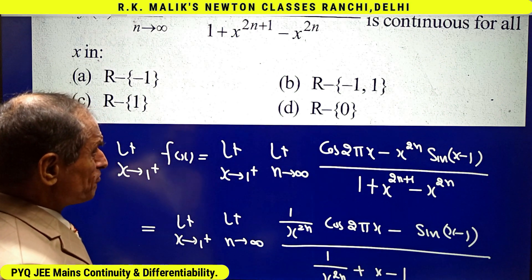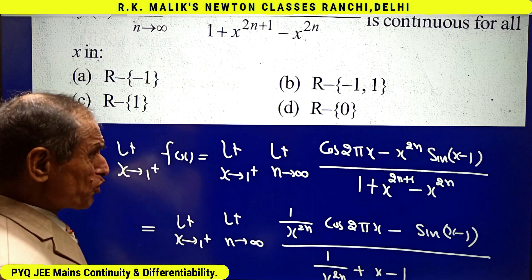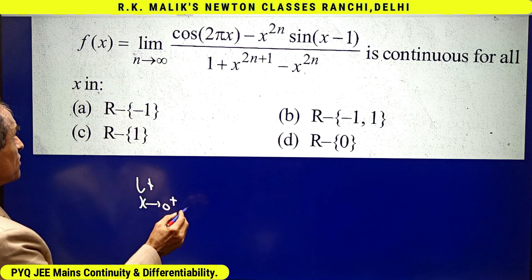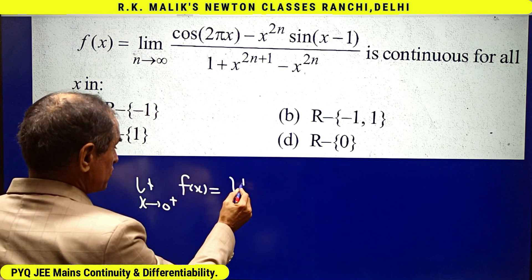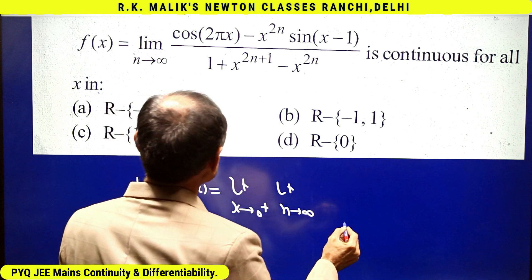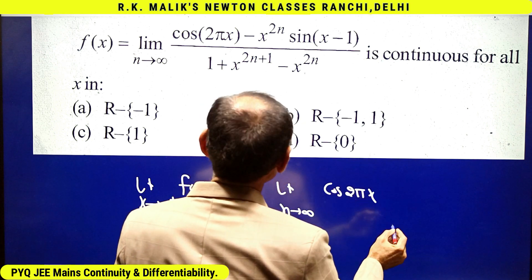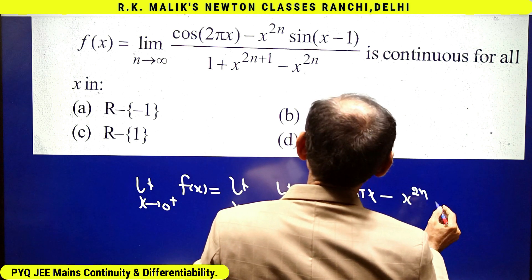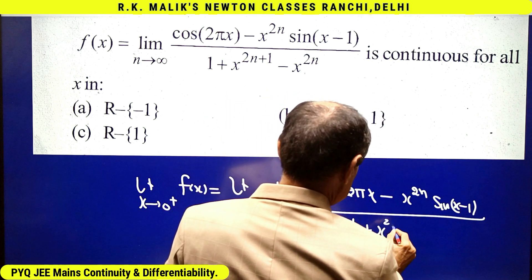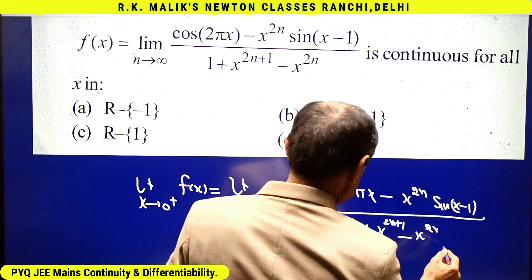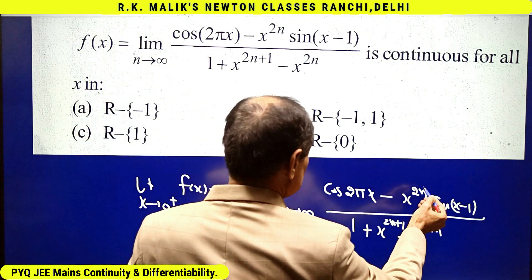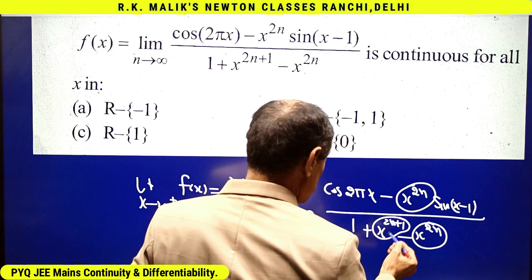In a similar way we can prove discontinuity at x = minus 1. For more clarity, let us also discuss continuity at x = 0. The right-hand limit: lim(x→0⁺) f(x) = lim(x→0⁺) lim(n→∞) [cos(2πx) − x^(2n) · sin(x−1)] / [1 + x^(2n+1) − x^(2n)]. When x is very near to 0 and slightly more than 0, as n→∞, x^(2n) → 0, so all terms involving x^(2n) and x^(2n+1) tend to 0.